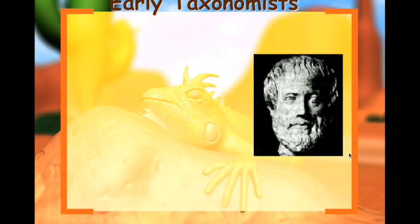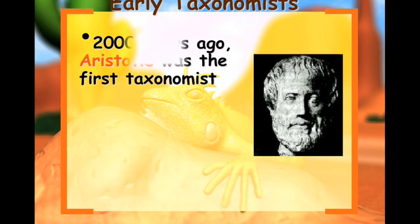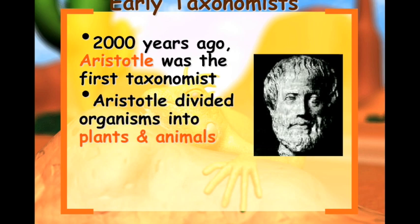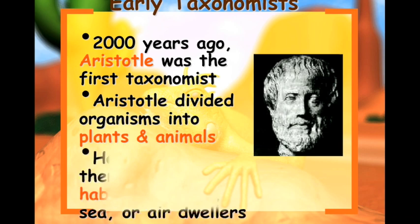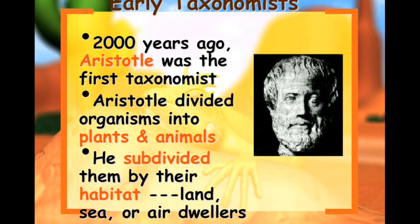So an early taxonomist: 2,000 years ago, Aristotle was the first taxonomist. Aristotle divided organisms into plants and animals. He then subdivided them by their habitat — land, sea, or air dwellers.